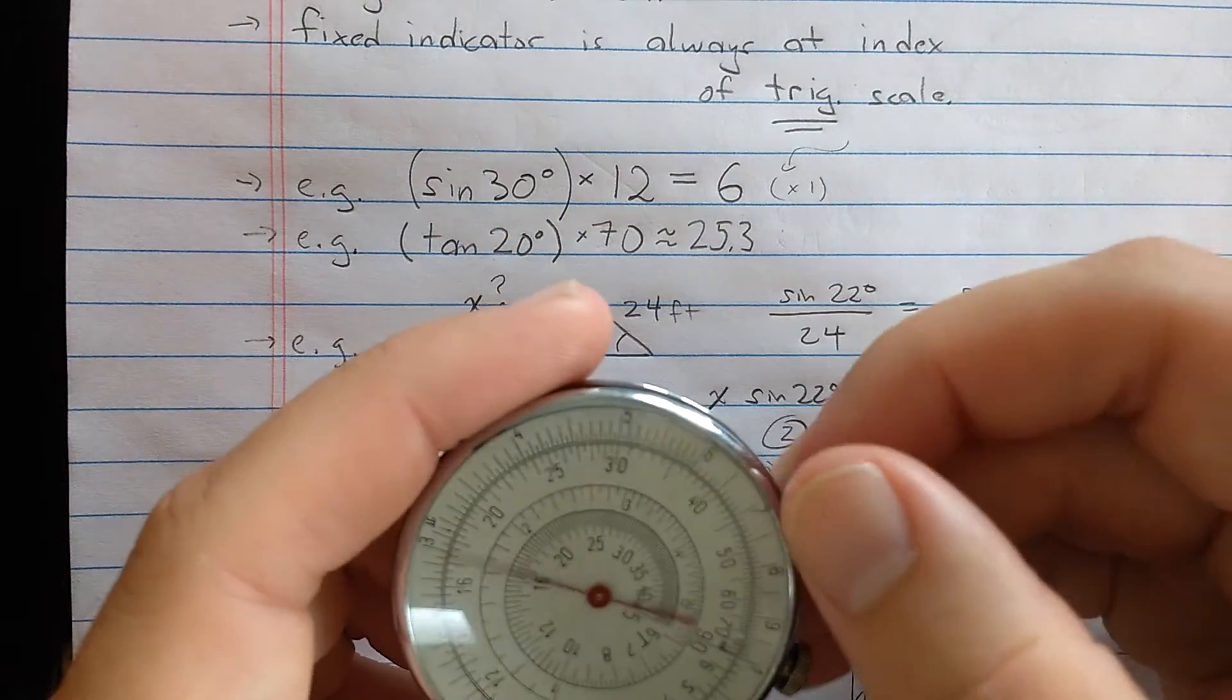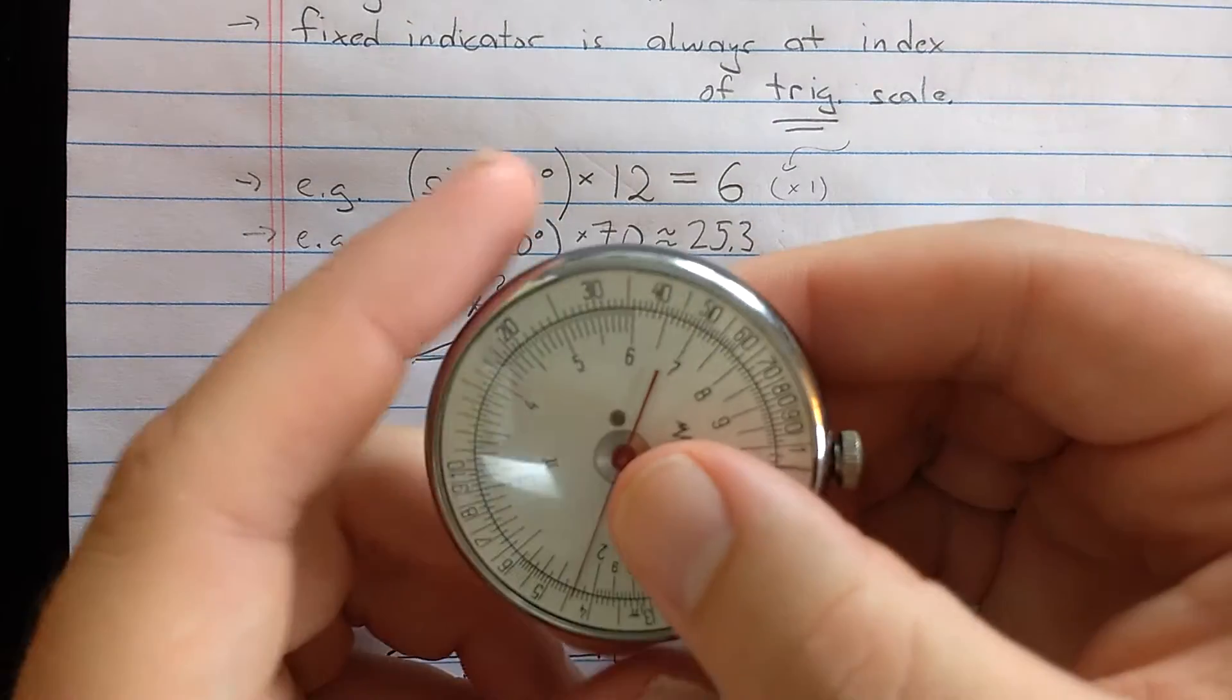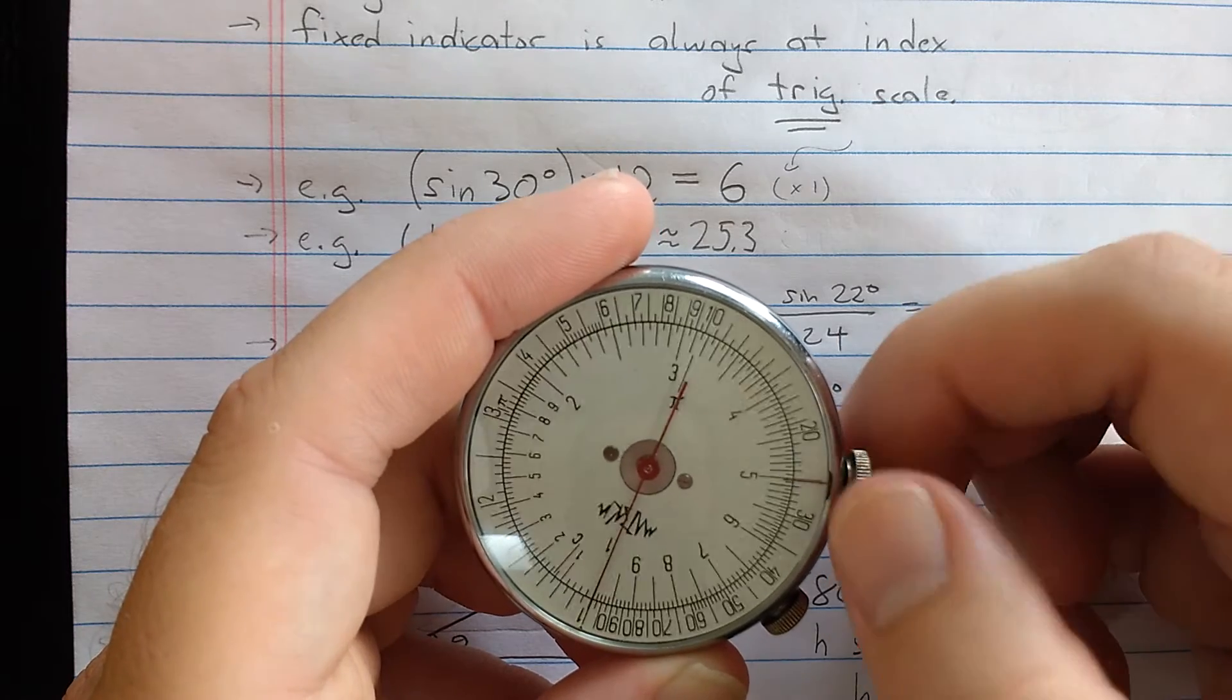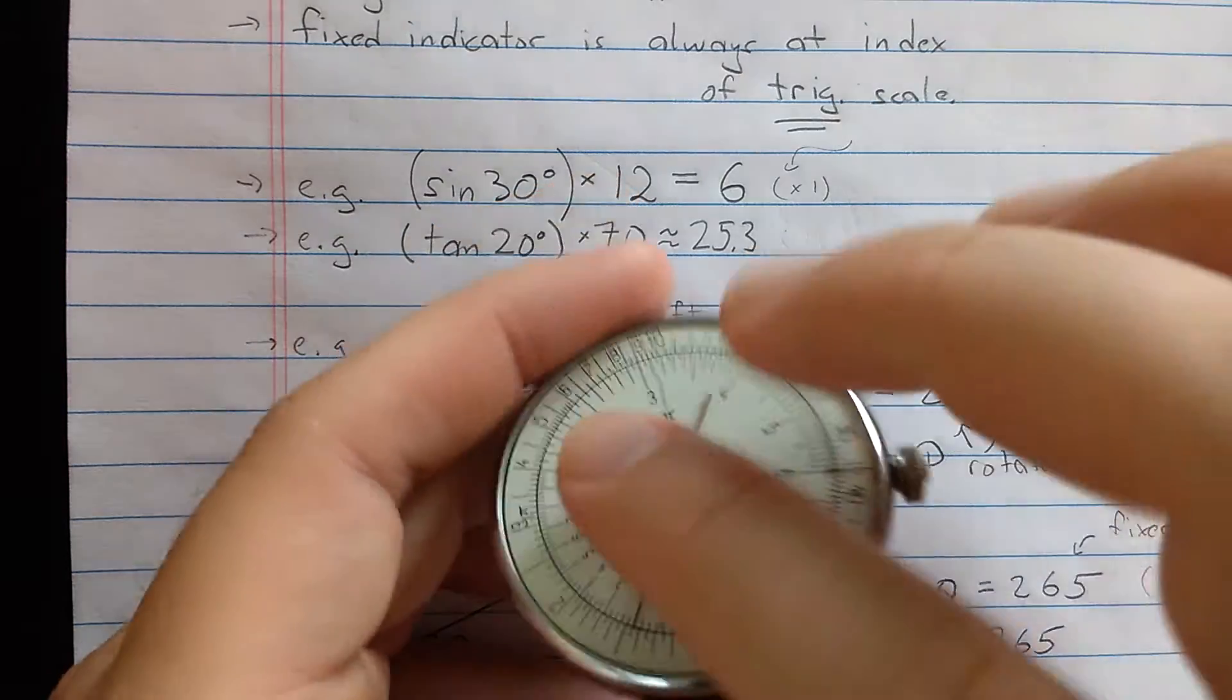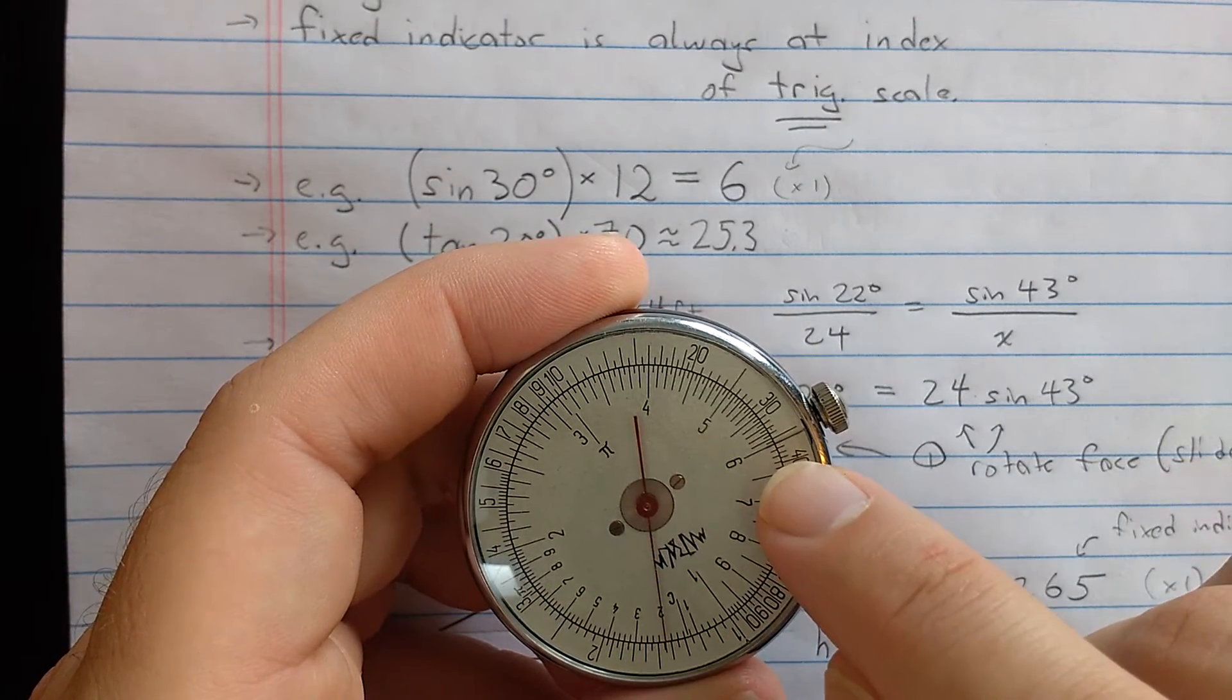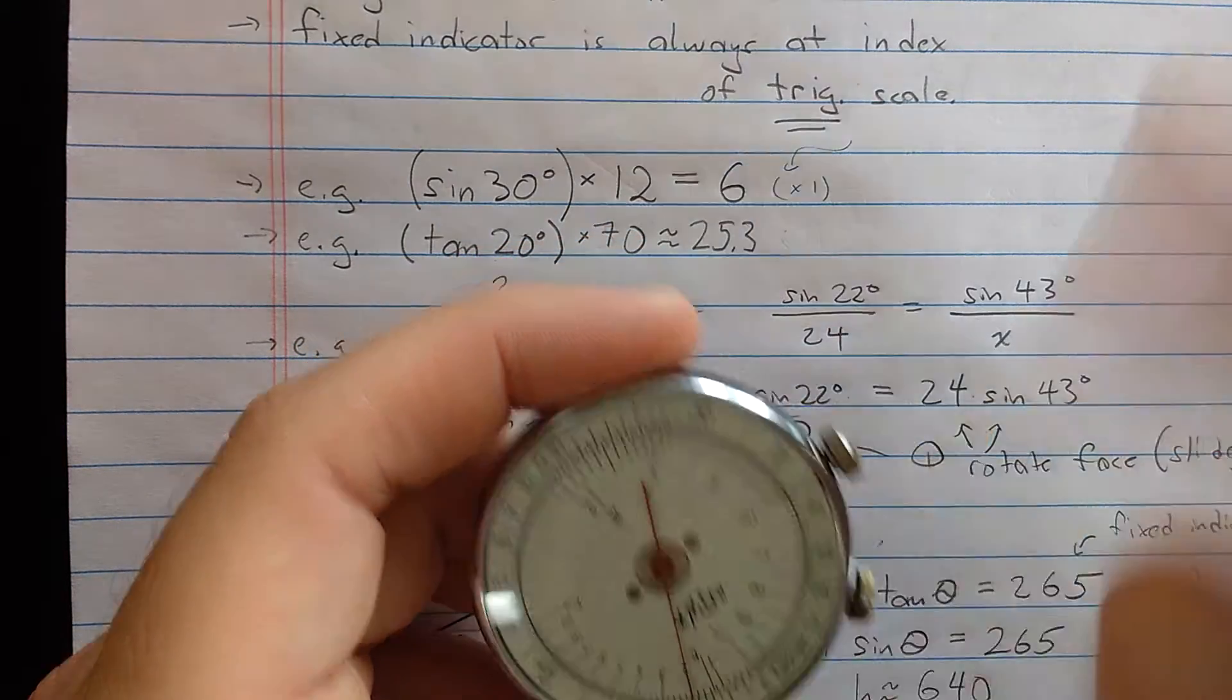Say we want to do sine of 30 degrees times 12. It doesn't matter what state you're in. Find 30 degrees here on the S scale right there. Then you want to multiply by 12, flip over. Then you want to slide the slide rule so that 12 is aligned with the needle. Once you've done that, the cursor essentially is aligning 12 with the sine 30 degrees. So then when you do that, you come out to the indicator, which is aligned with the 1 on the back side, then you read the result, 6. So it's that easy.